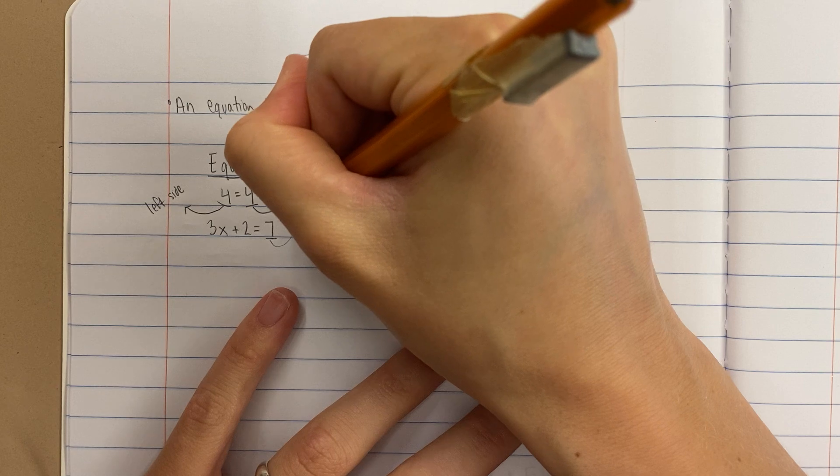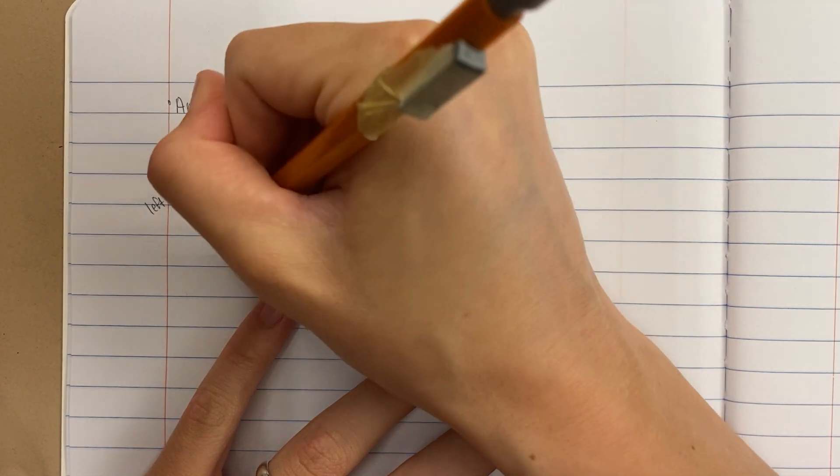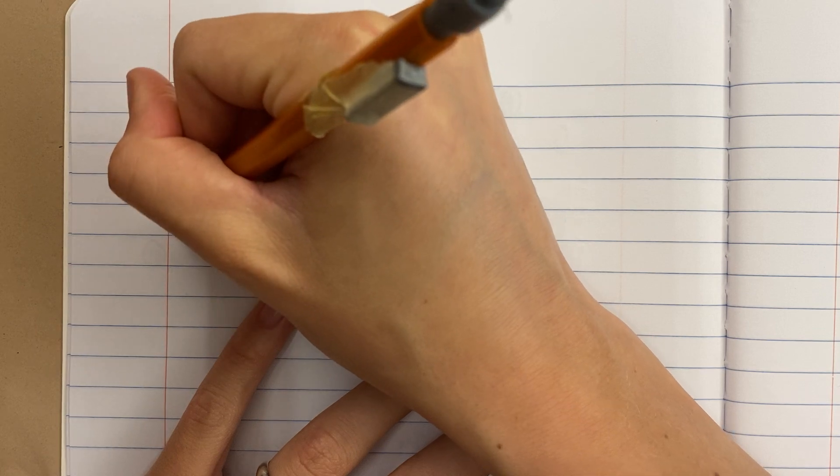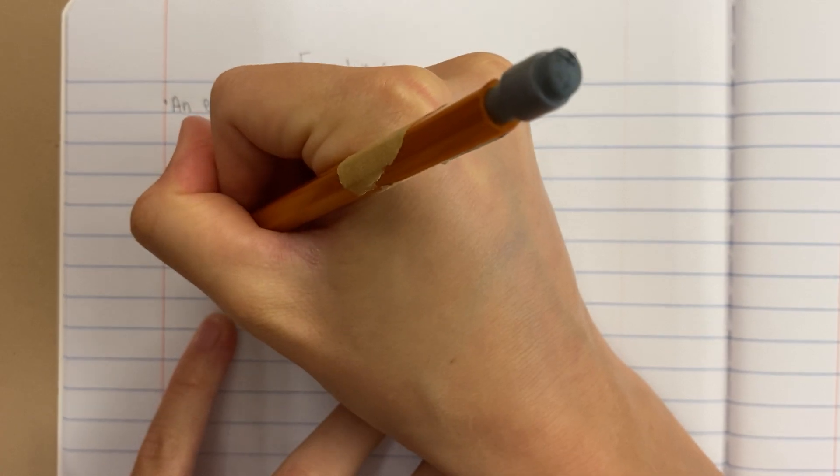This equation has a right side on the right side of the equal sign. Here's the equal sign, that's the midpoint, and here's the left side of the equation.